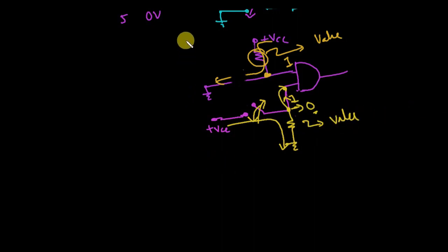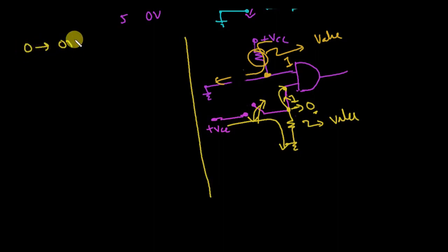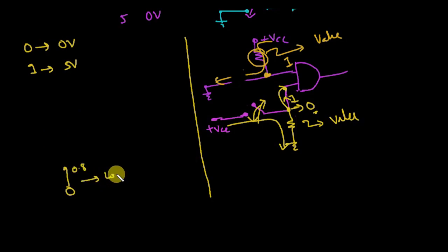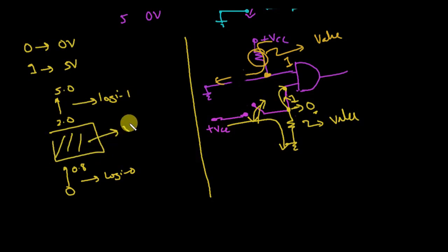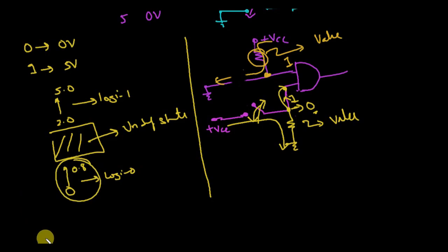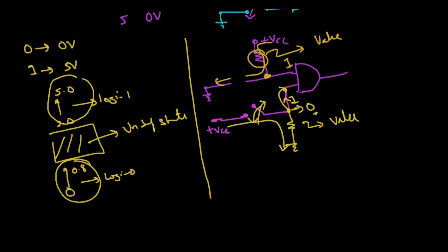To calculate the resistor values, we need to understand basic logic voltage levels. Logic 0 is not exactly 0 volts and logic 1 is not exactly 5 volts — there are ranges. From 0 to 0.8V it is considered logic 0; from 2.0V to 5.0V it is considered logic 1. In between these values is an undefined state where we can't say whether it is 1 or 0.